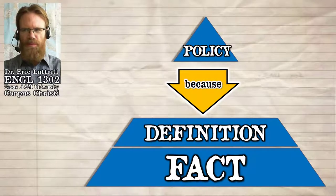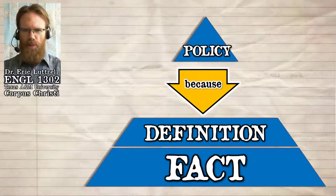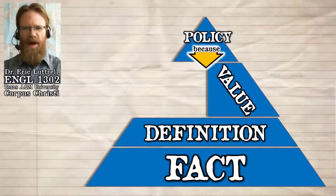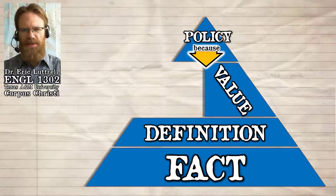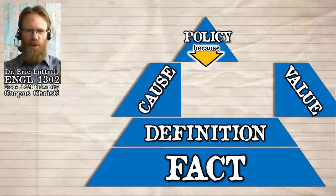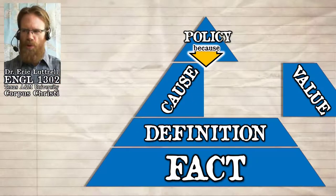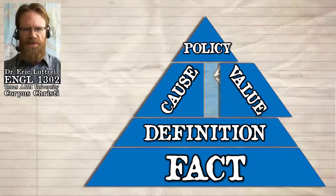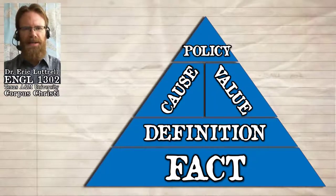First, we have to be sure that we and our readers or our audience value the same things, that we want the same outcomes. And once we know what outcomes we want, we have to decide how to get that outcome. So that brings us to our next two points of stasis: cause and value.